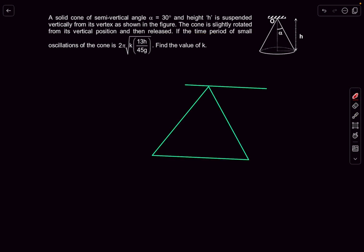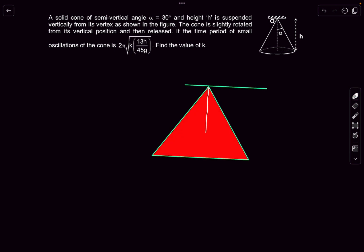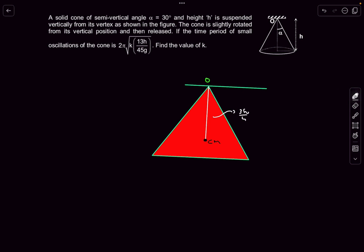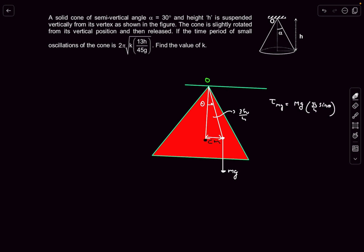For a solid cone, the center of mass lies at a distance of 3h/4 from the apex. If we displace the cone by a small angle θ in the counterclockwise sense, the line from O to CM rotates by θ. The torque due to gravity is mg × (3h/4) × sinθ, acting in the clockwise sense (restoring).